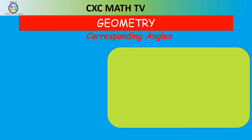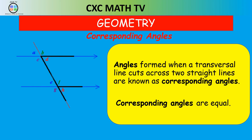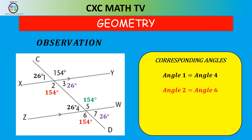Finally, there is one more law: corresponding angles. When a transversal line cuts across two straight lines, the corresponding angles are equal. Color-coding them: D and H are equal, B and F are equal, A and E are equal, C and G are equal. Going back to our diagram, angle 1 equals angle 4, angle 2 equals angle 6, angle 3 equals angle 7, and angle 5 is 154 degrees — all by corresponding angles.